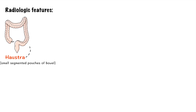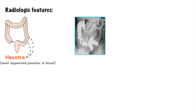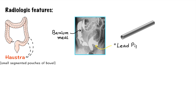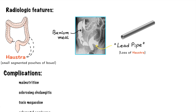In a normal intestine, the small segmented pouch-like structures are called haustra, which are usually absent in affected areas. The radiological appearance on barium meal follow-through is known as 'lead pipe appearance,' which is due to the loss of haustra.